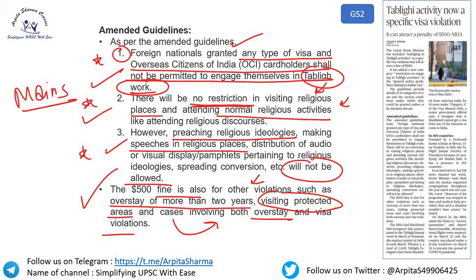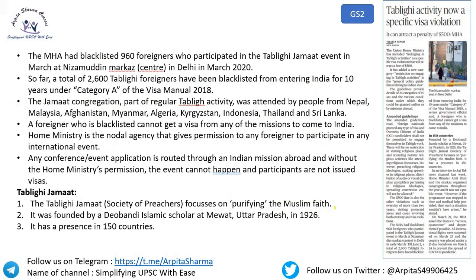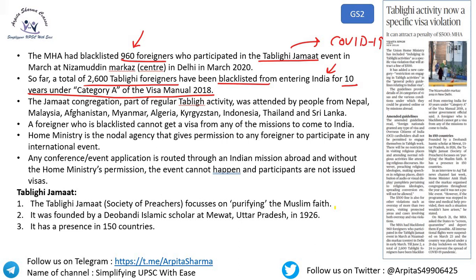These guidelines are important for your Mains. The MHA had blacklisted 960 foreigners who participated in the Tablighi Jamaat event, which caused a spike in COVID-19 cases. A total of 2,600 Tablighi foreigners have been blacklisted from entering India for 10 years. Tablighi Jamaat — the 'Society of Preachers' — focuses on purifying the Muslim faith; it was founded by Deobandi Islamic scholar at Mewat in 1926 and has a presence in 150 countries.